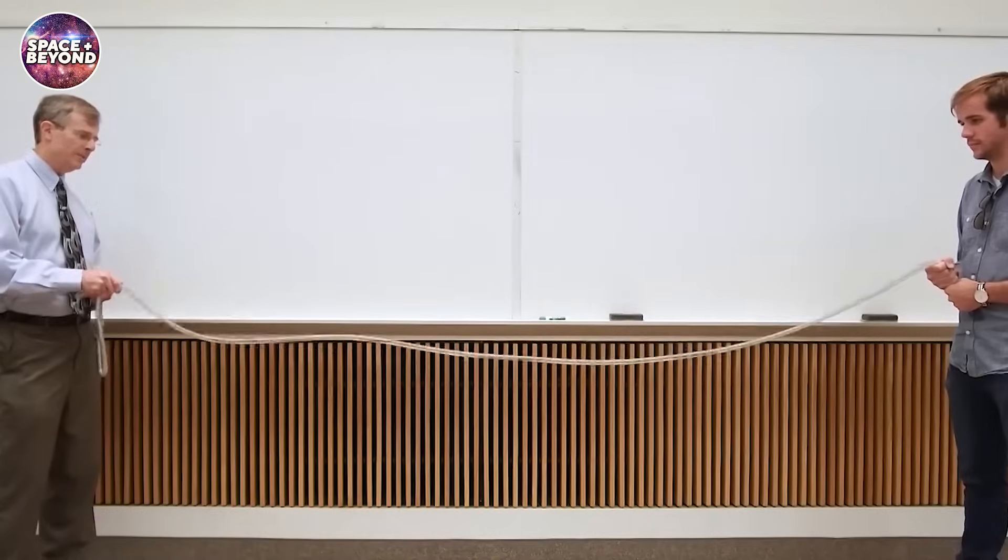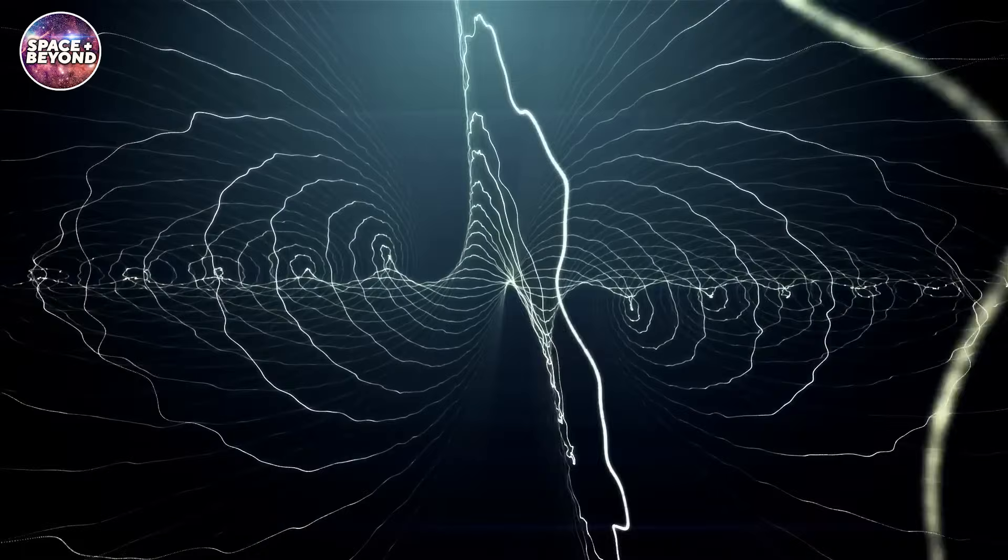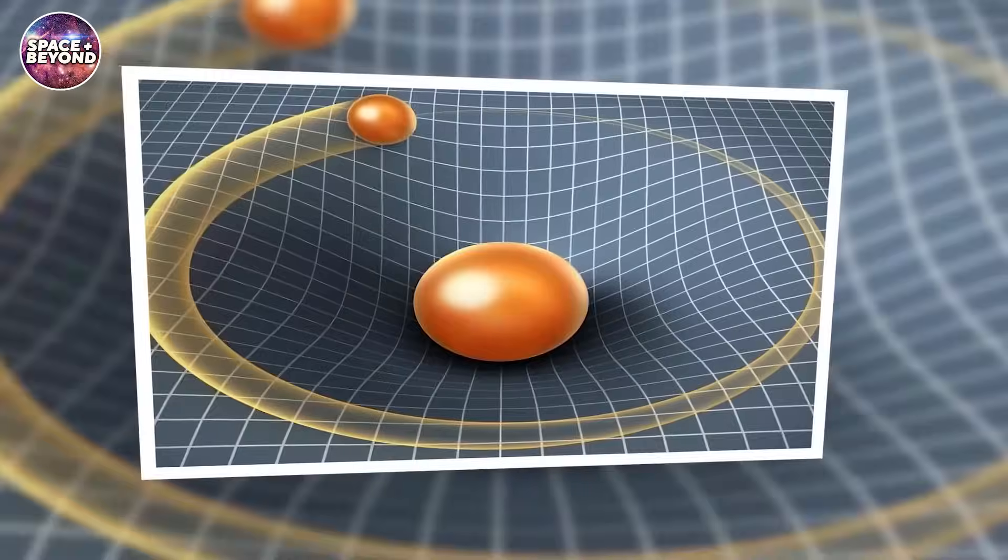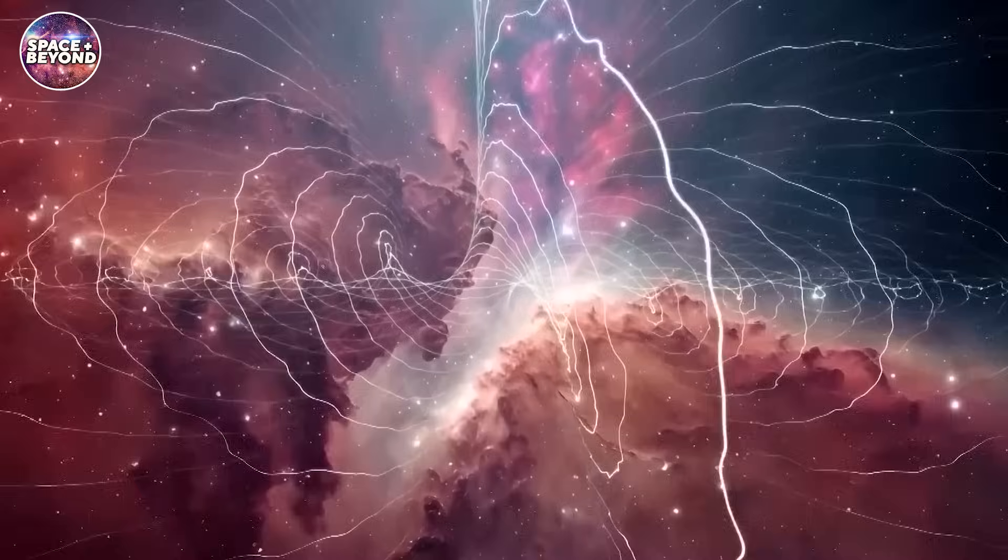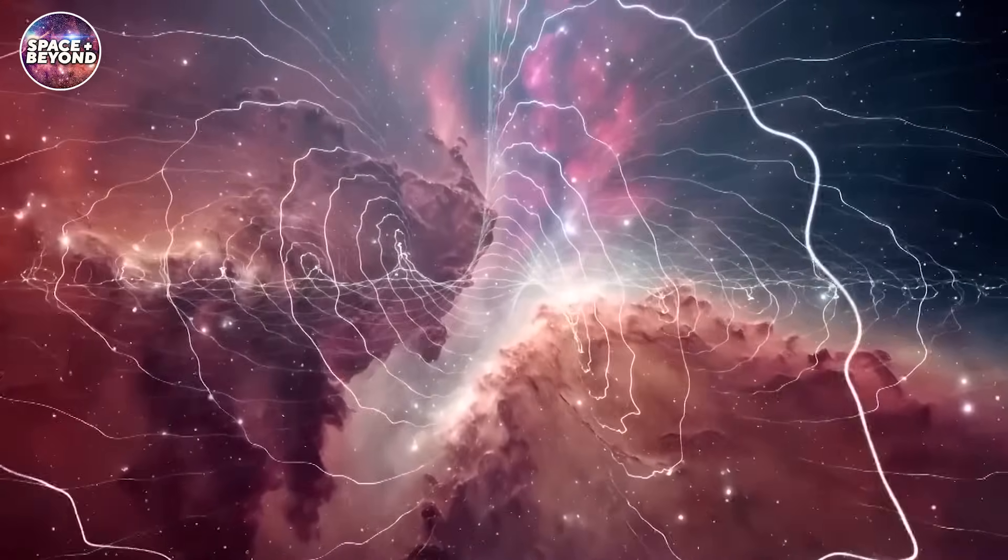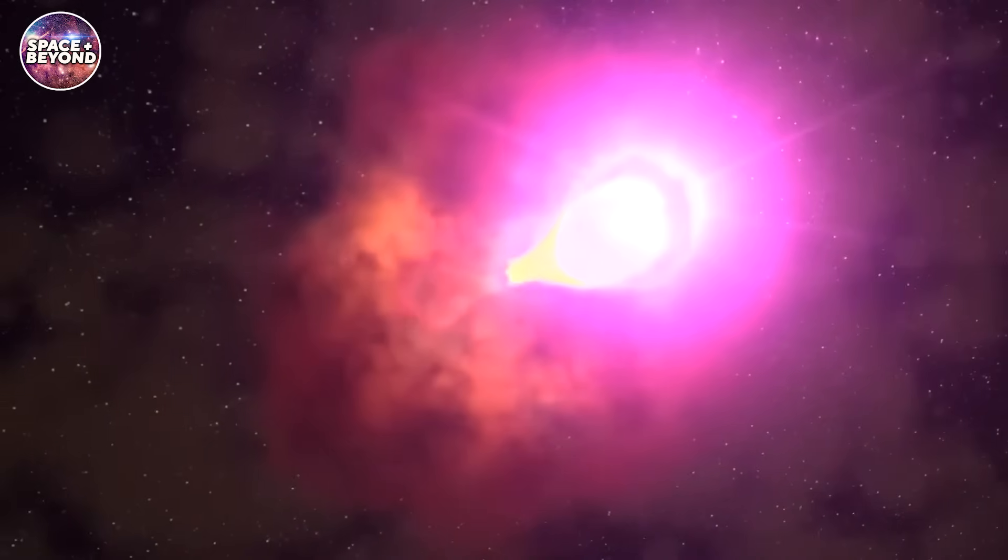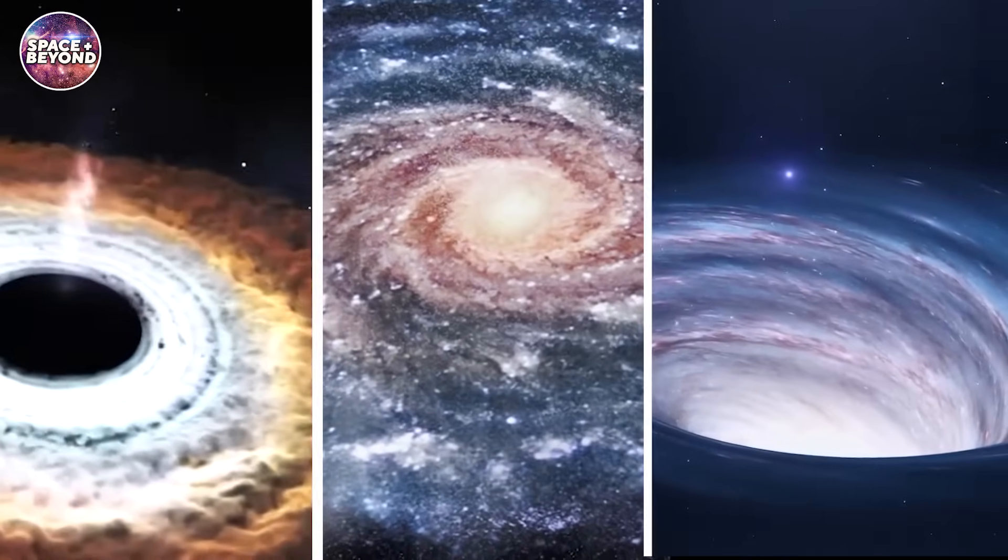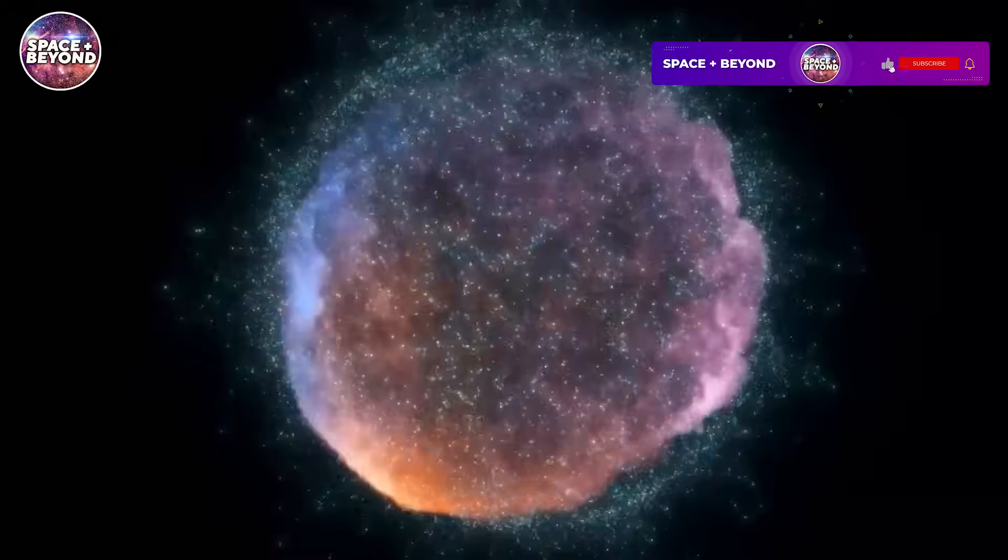Simply put, super-string theory states that subatomic particles are really just vibrations of a super-string, with each vibration corresponding to particles found in the universe. It states that the universe is basically a symphony of vibrating strings, such that as a string moves in time, it warps the fabric of space-time around it, producing the multitude of different phenomena we observe in space today. These include black holes, galaxies, wormholes, and other exotic solutions contained in both Einstein's equation and those found in quantum mechanics.